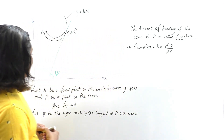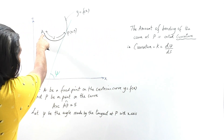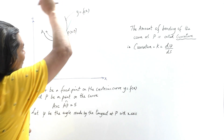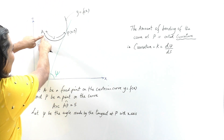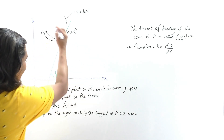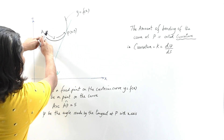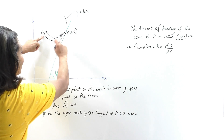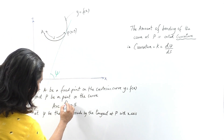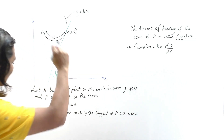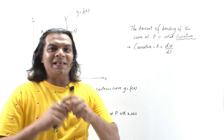Now, if you see this figure: let A be a fixed point on the Cartesian curve y = f(x). I have a curve here and I have taken A as a fixed point on it, and one more point P on the curve. The arc length AP is denoted as s. And let ψ be the angle made by the tangent at P with the x-axis.